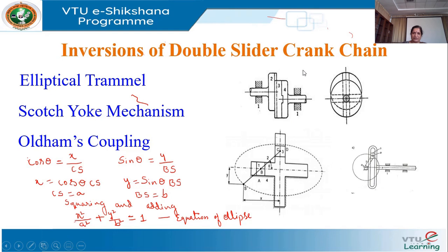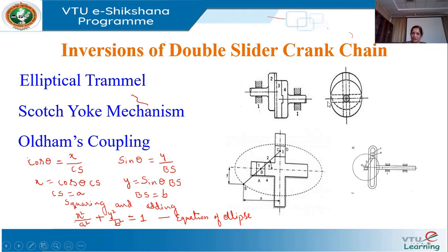One more inversion of the double slider crank mechanism is the Oldham's coupling. The Oldham's coupling is used to connect two shafts and transmit power from one shaft to the other. These shafts are parallel to each other but not collinear — they have an offset distance.